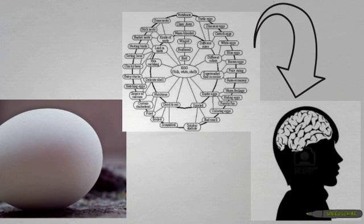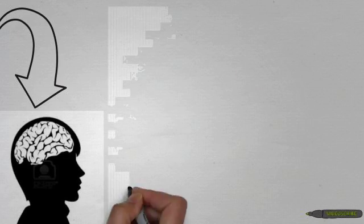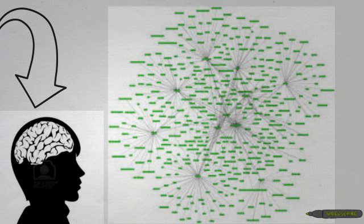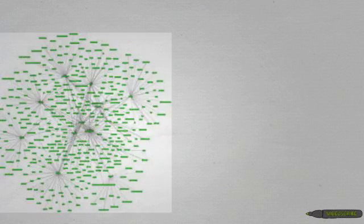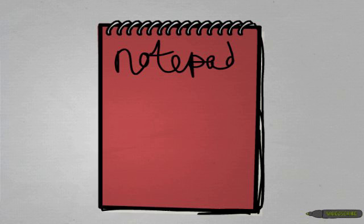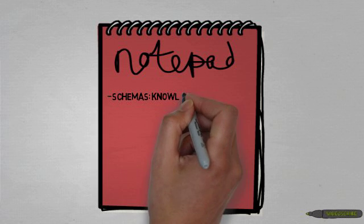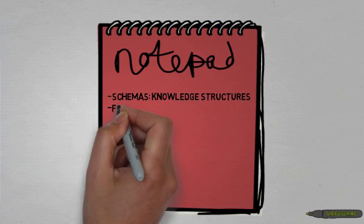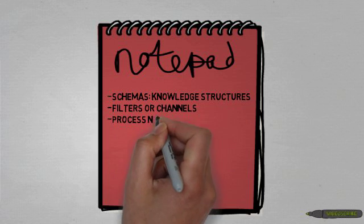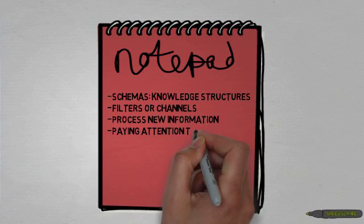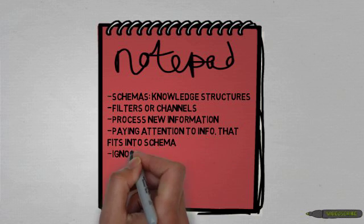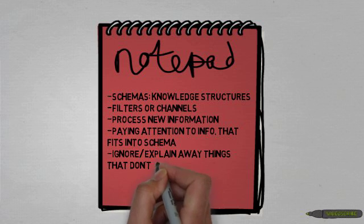Like the different colors, uses, and origins of eggs. One person has a whole lot of schemas for a variety of concepts, as you can see in this really complicated map. These schemas or knowledge structures act like channels or filters that process new information, and they guide you in paying attention to things that fit into your schema, and then you tend to ignore or explain away things that don't fit in.